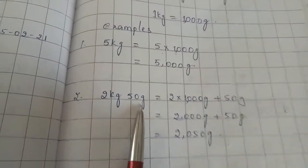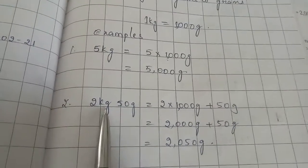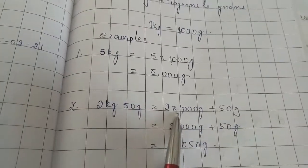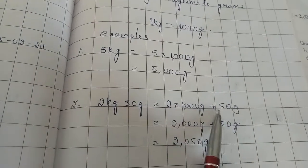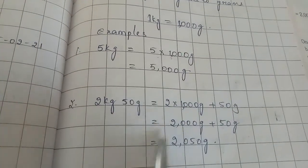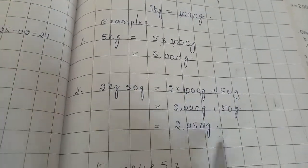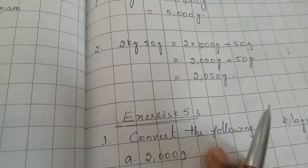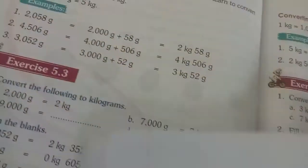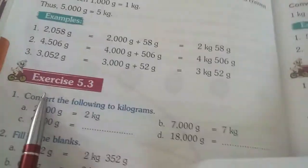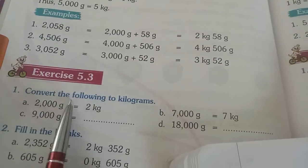5000 grams. Next, 2 kg 50 grams means 2 kg equals 2 into 1000 plus 50, so 2000 grams plus 50 grams. Now we will start doing exercise 5.3.